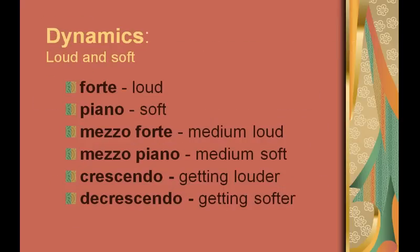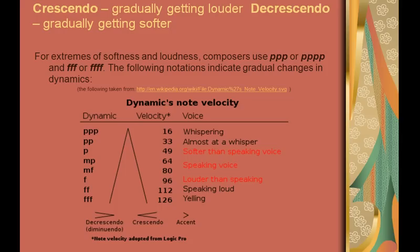Dynamics can be loud and soft. Forte can be loud. Piano is soft. Mezzo forte is medium loud. Mezzo piano is medium soft. Crescendo is gradually getting louder and decrescendo is gradually getting softer. For extremes of softness and loudness, composers use PPP or PPPP and FFF or FFFF. The following notations indicate gradual changes in dynamics.